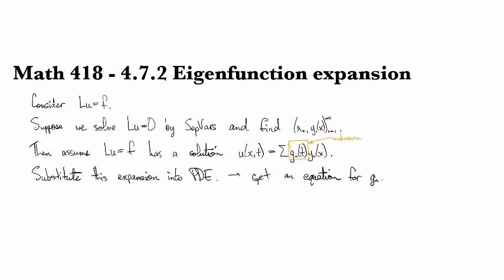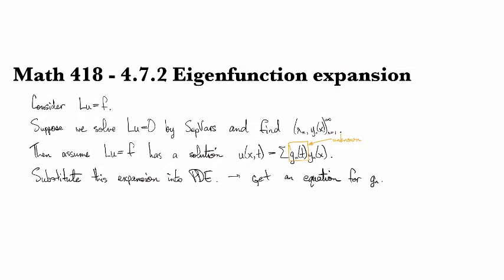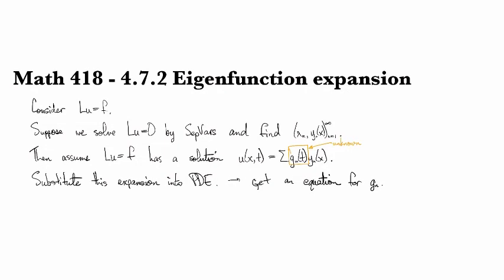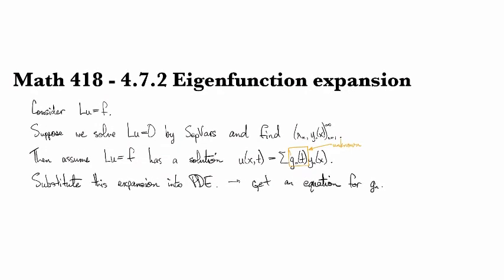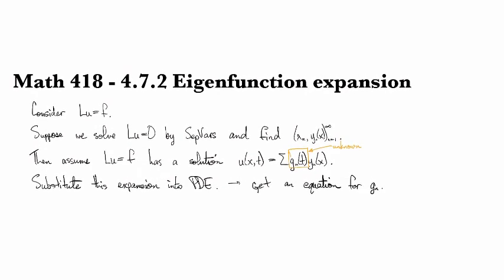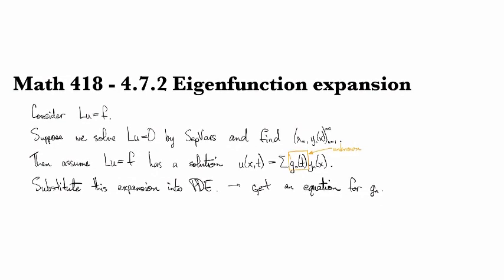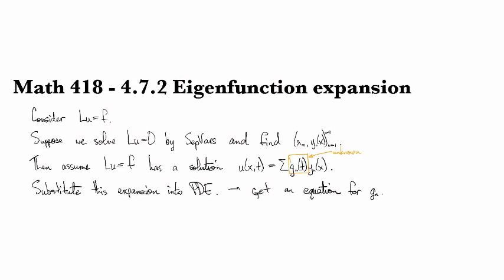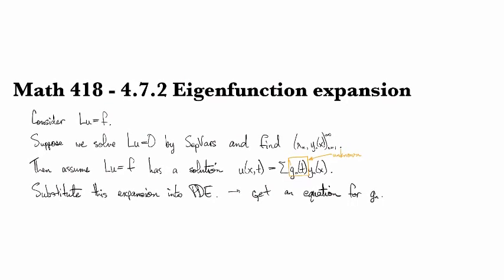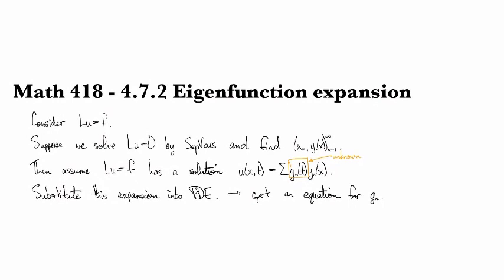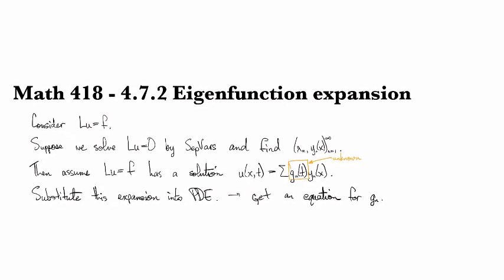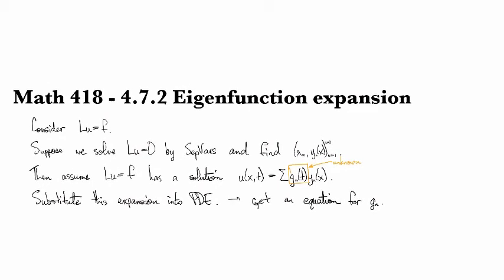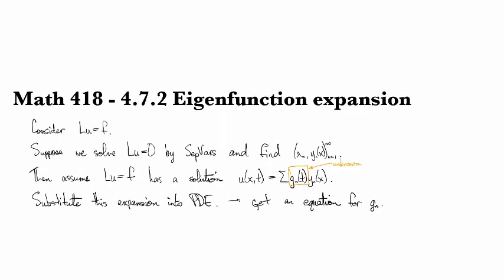This is a meta technique that's used a lot in various different areas of mathematics, especially in differential equations, but also in functional analysis and other places where there's a thing you want to find. You make a general assumption about the shape of its form. Then you plug that into whatever equation it's supposed to satisfy. And that equation ends up telling you what the specifics are about that general form.